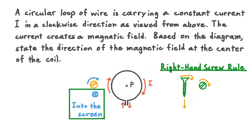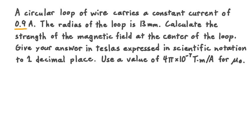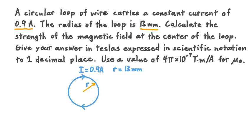Let's look at a second example. A circular loop of wire carries a constant current of 0.9 amperes. The radius of the loop is 13 millimeters. Calculate the strength of the magnetic field at the center of the loop, giving your answer in teslas in scientific notation to one decimal place, using mu-naught equals 4 pi times 10 to the negative 7th tesla meters per ampere. We have current I of 0.9 amperes, and radius R of 13 millimeters. We want to calculate the magnetic field magnitude B at the center of the loop.